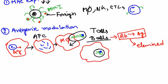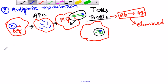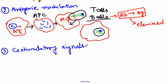The third type of process cancer cells use is related to co-stimulatory signals. There are immune cells present inside our body — T cells, T lymphocytes, and T helper cells — that require co-stimulatory signals for full activation.